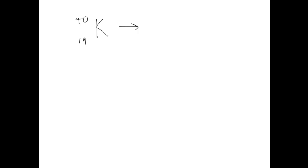Let me talk you through beta decay using potassium. Potassium has a mass number of 40 and an atomic or proton number of 19. In beta decay, the neutron turns into a proton, so the mass number will stay the same because they both have the same mass. However, because a proton has been gained, the atomic number will go up by 1. The mass stays at 40, the atomic number goes up by 1 to become 20. Because we have a new atomic number, we have a new element — calcium.